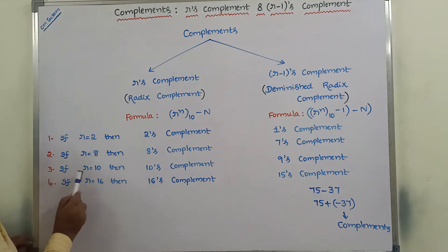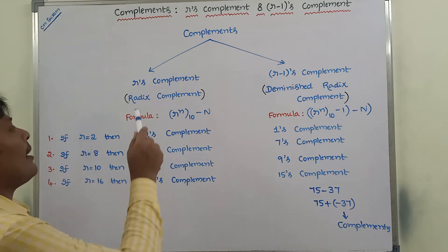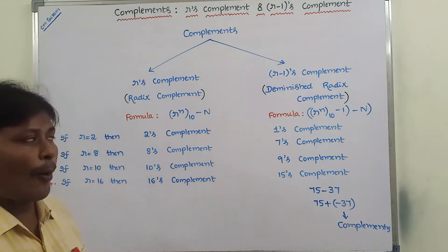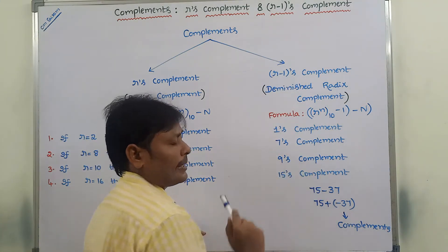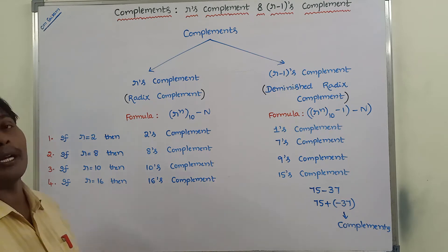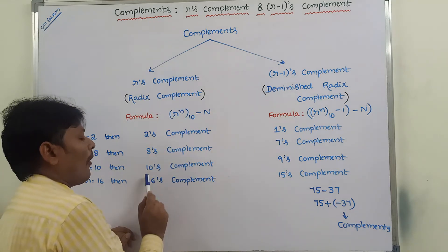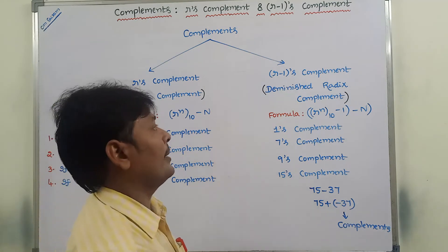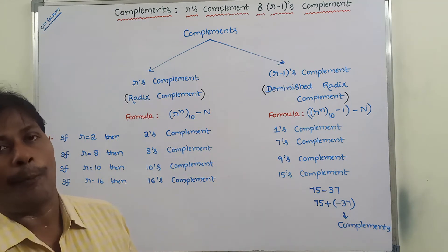R-1's complement can be called as 7's complement. If R value is equal to 10, that means base or radix is equal to 10, then R's complement can be called as 10's complement and R-1's complement can be called as 9's complement. If R is equal to 16, then R's complement is 16's complement and R-1's complement can be called as 15's complement.